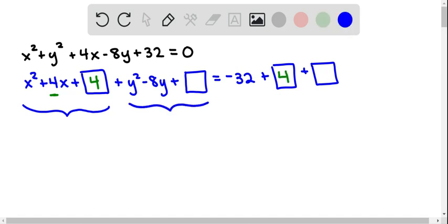And similarly for y, to complete the square we take half of negative 8 and square it, and that's going to be positive 16. And so we add 16 to the other side of the equation as well.